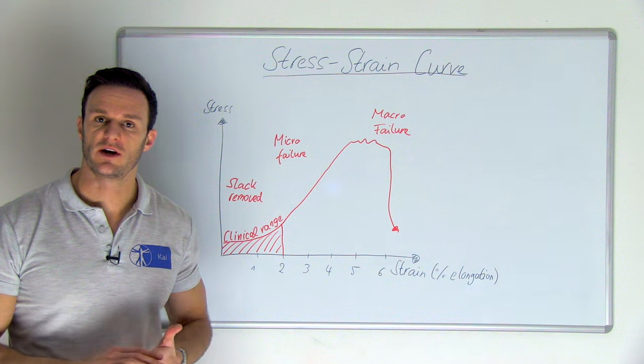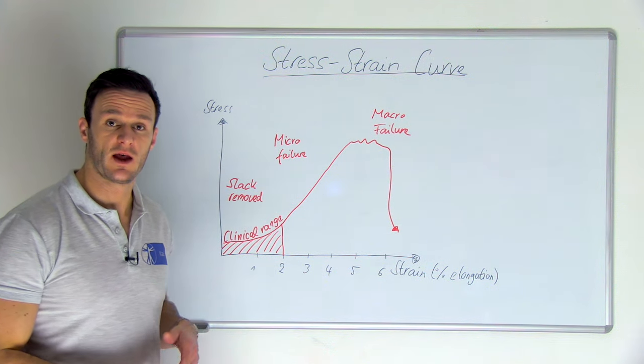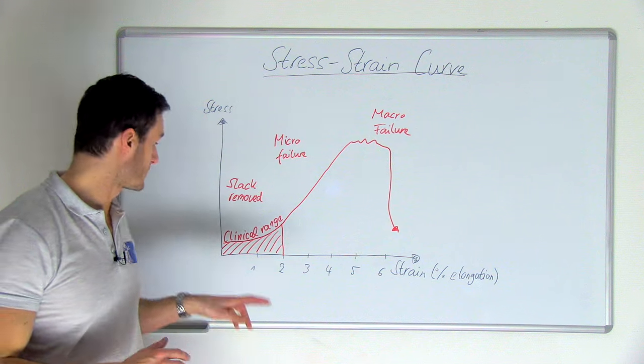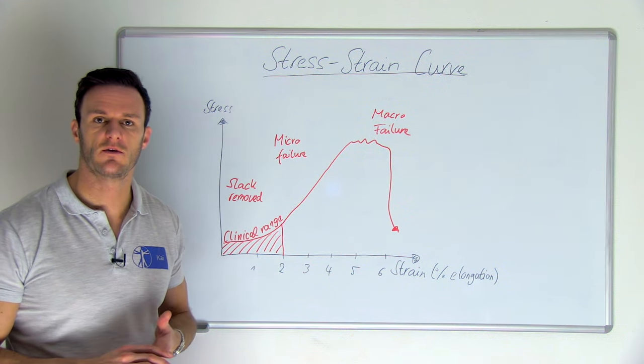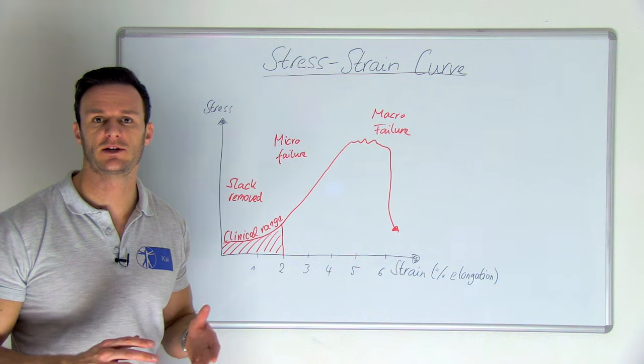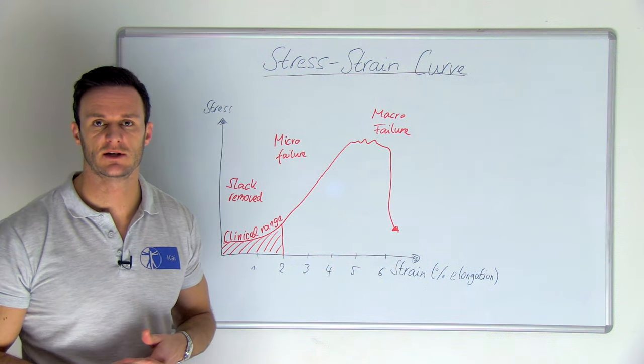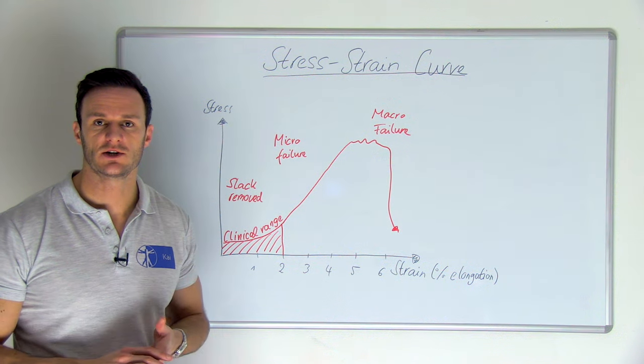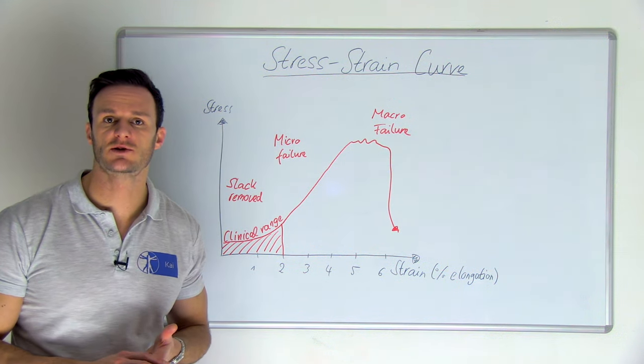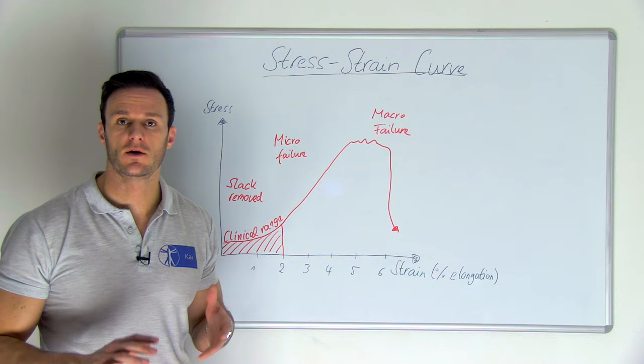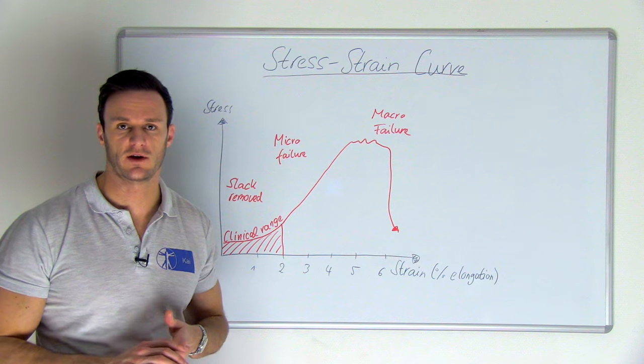When we look at the stress-strain curve of a capsule or ligament, we can see that crimp is removed in the collagen fibers after around 1% of elongation strain. The first 1-2% of elongation is the clinical range in which we carry out our examination and mobilizations. Above the clinical range, micro-failure of the bonds between the collagen fibers and tropocollagen molecules occurs until the collagen fiber finally fails above around 4% of elongation.